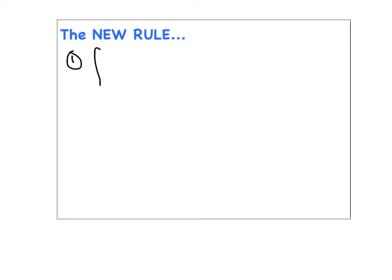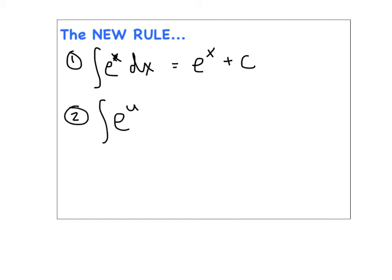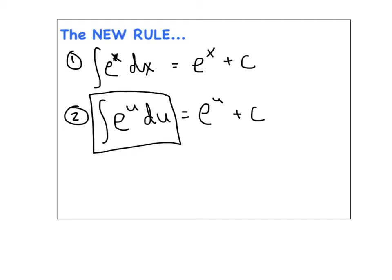Just like deriving exponential functions was one of the easiest rules ever, the integral on the surface is a very easy rule. The antiderivative of e to the x with respect to x is simply e to the x plus c. More generically, in terms of u, since u is a function of x, the antiderivative of e to the u is simply e to the u plus c. The challenge tonight is getting our integral into this form.